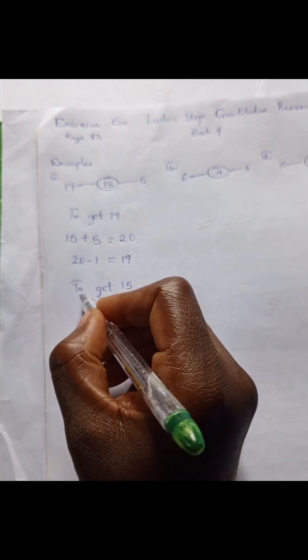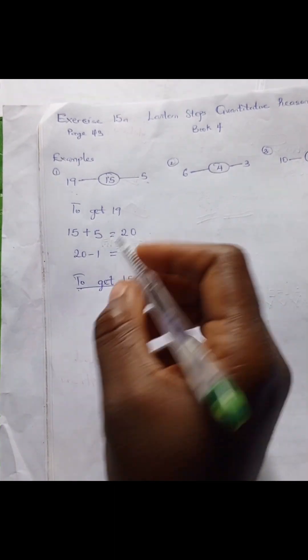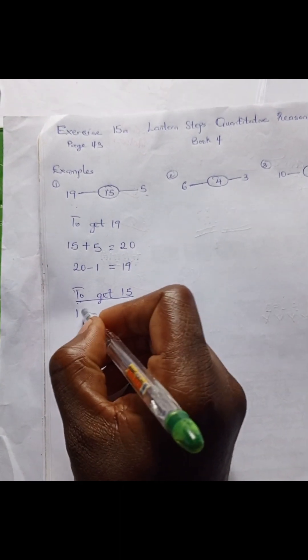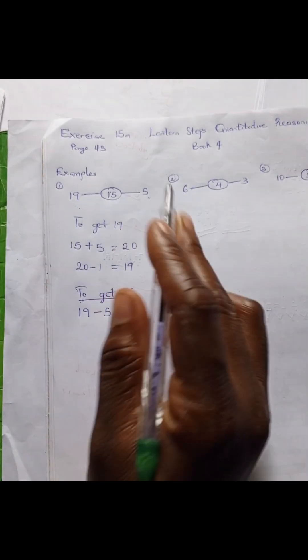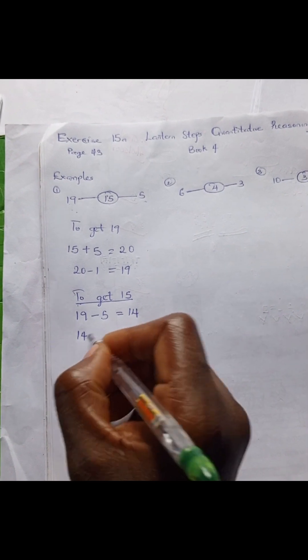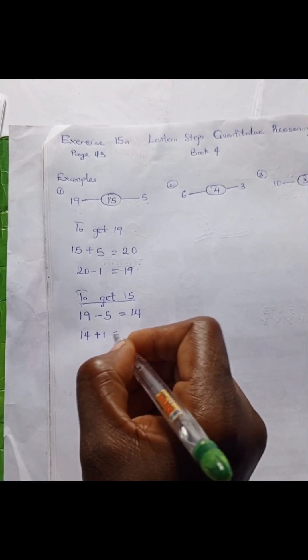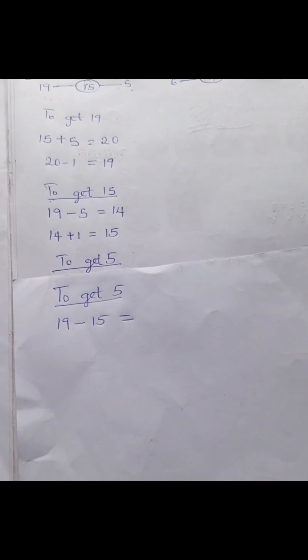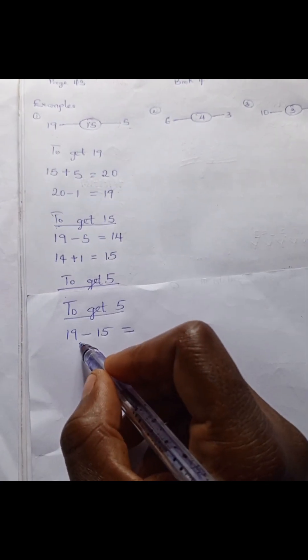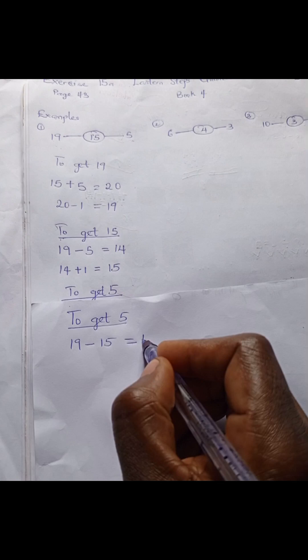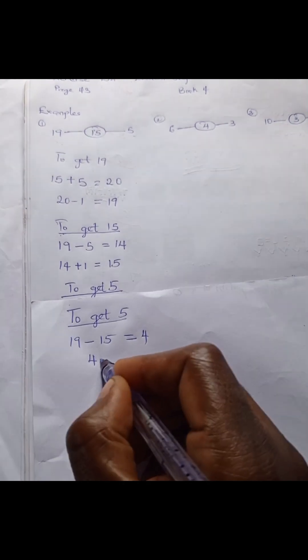To get 15, we have 19 minus 5. 19 minus 5 is 14. Remember there is 1 somewhere, so 14 plus 1 is 15. To get 5, we have 19 minus 15, which is 4. 4 plus 1 is 5.